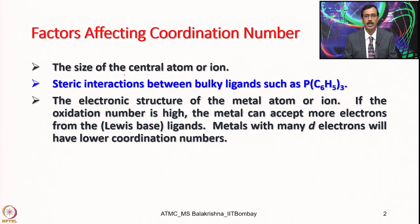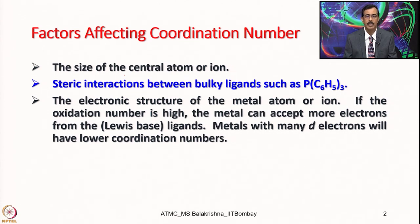The electronic structure of the metal atom or ion is also equally important. If the oxidation number is high, the metal can accept more electrons from the ligands acting as Lewis bases, because it has more empty orbitals. Metals with many d electrons will have lower coordination number. That is the reason when we go to later transition metals after d6 electronic configuration, the tendency to have a lower coordination number is more pronounced compared to early metals.